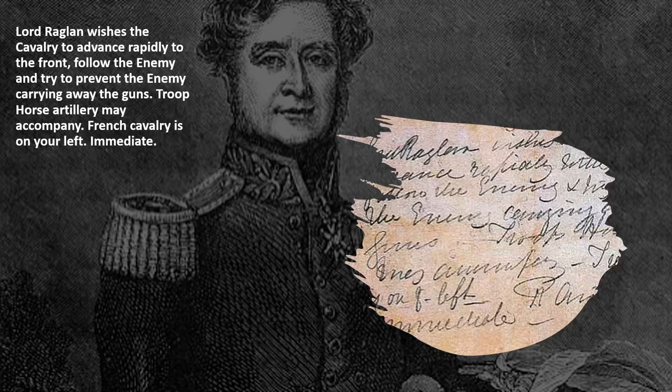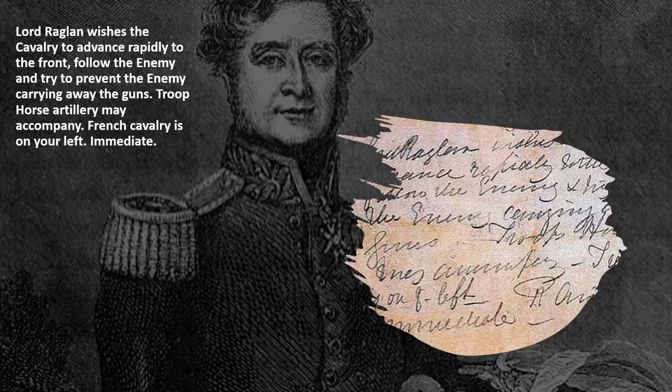The message for the charge came from Lord Raglan. The message read: 'Lord Raglan wishes the cavalry to advance rapidly to the front, follow the enemy and try to prevent the enemy carrying away the guns. Troop horse artillery may accompany. French cavalry is on your left. Immediate.' Miscommunication absolutely happened, but historians are not exactly clear on whose responsibility this mistake was. What is clear is that the Light Brigade received the wrong orders; we just don't know the full story.